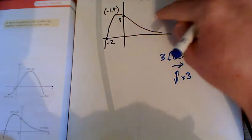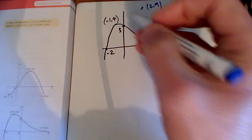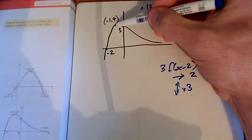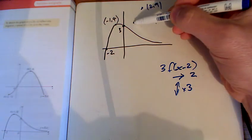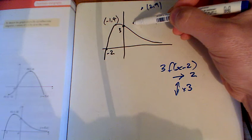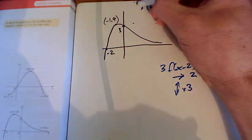That first point is off the top of my page there. So this one here at minus 1, 4, move it 2 to the right, moves it to 1, 4, and then times by 3, it's all the way up there at 1, 12.